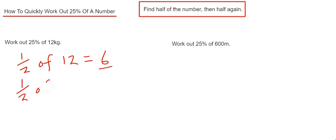So we do a half of 6, and that gives us 3 kilograms. If you're having trouble with the halving, then you can just divide by 2 and divide by 2 again. So let's have a look at the second example.